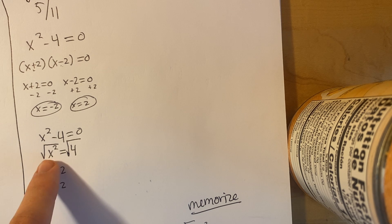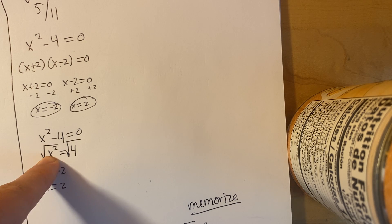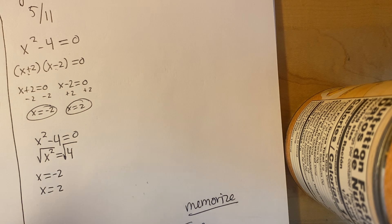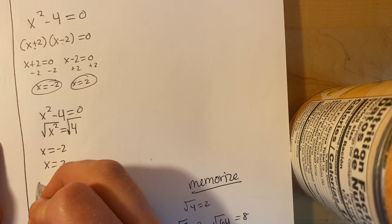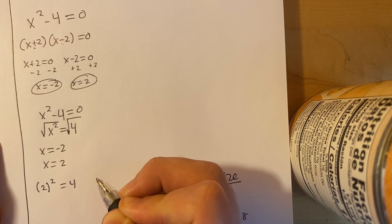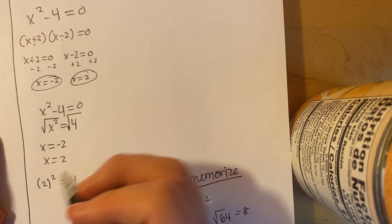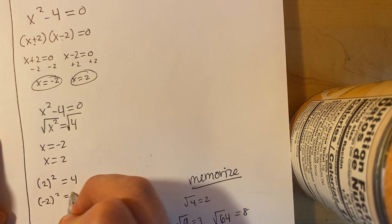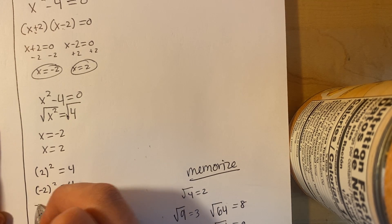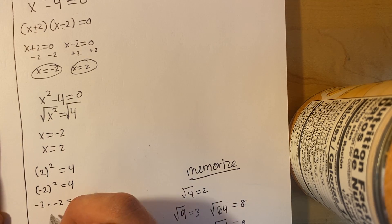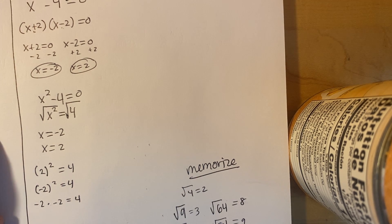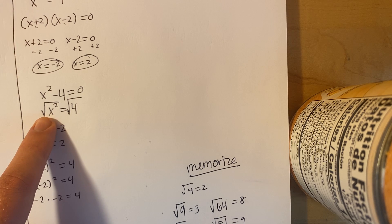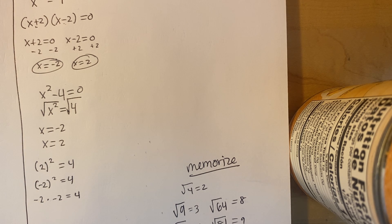Remember that in algebra, when we do something to one side we have to do it to the other side because there's an equal sign. You might be wondering why there are two answers. If you have 2 squared, that equals 4 because 2 times 2 is 4. But negative 2 squared also equals 4 because negative 2 times negative 2 — a negative times a negative is a positive — equals positive 4. So when you square root something like this, you're usually going to have two answers.